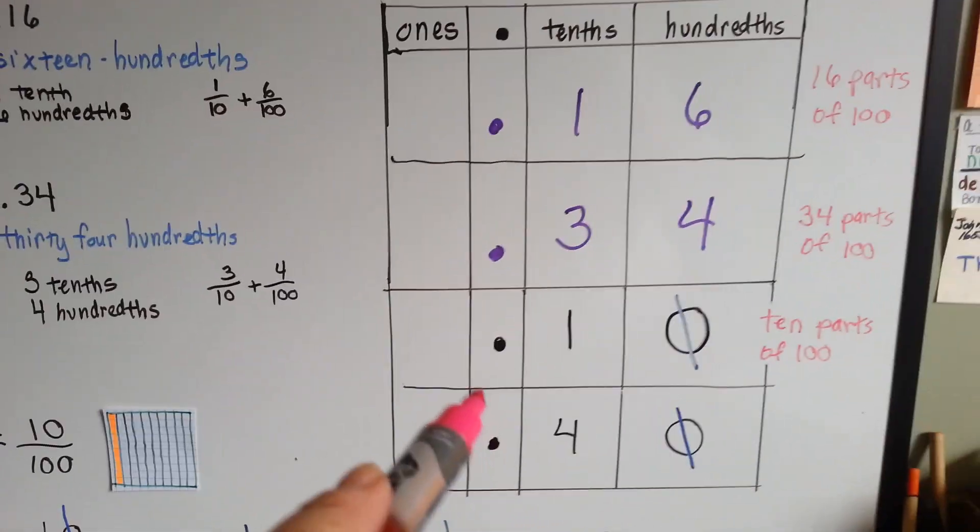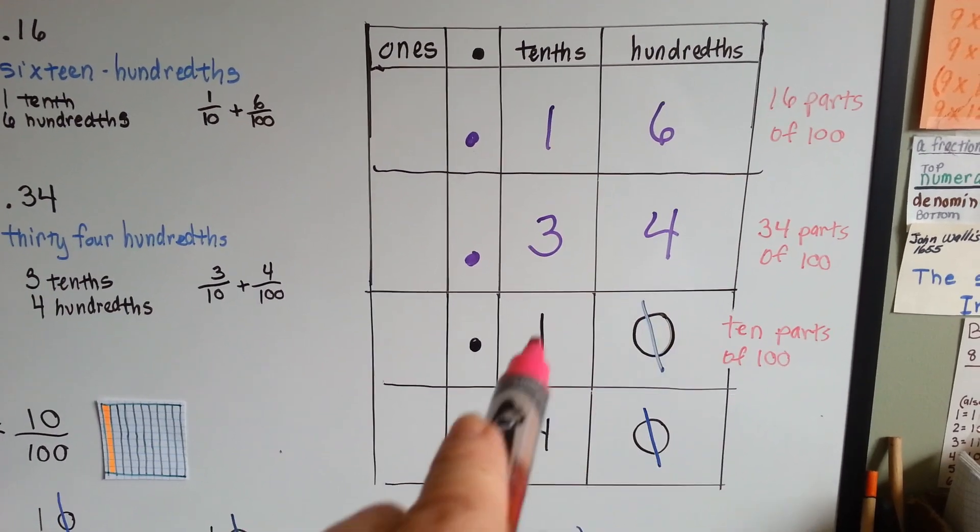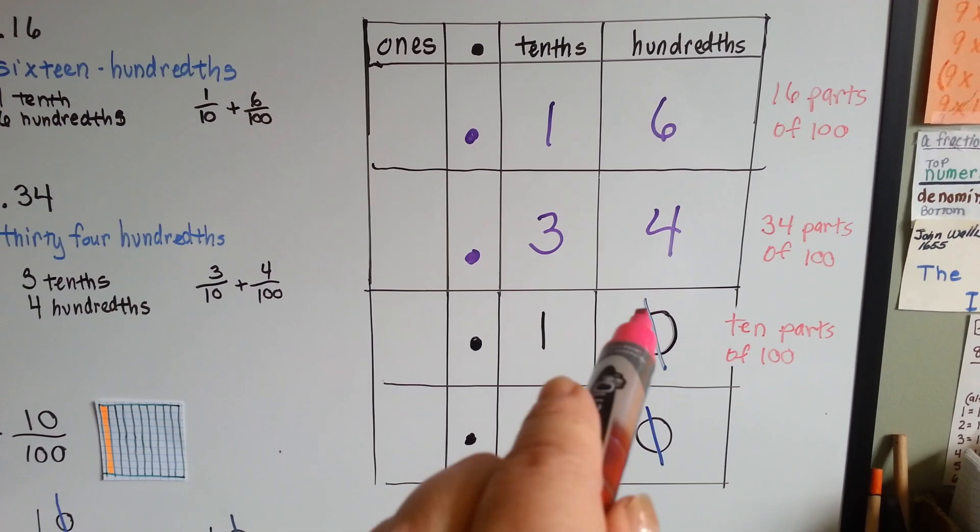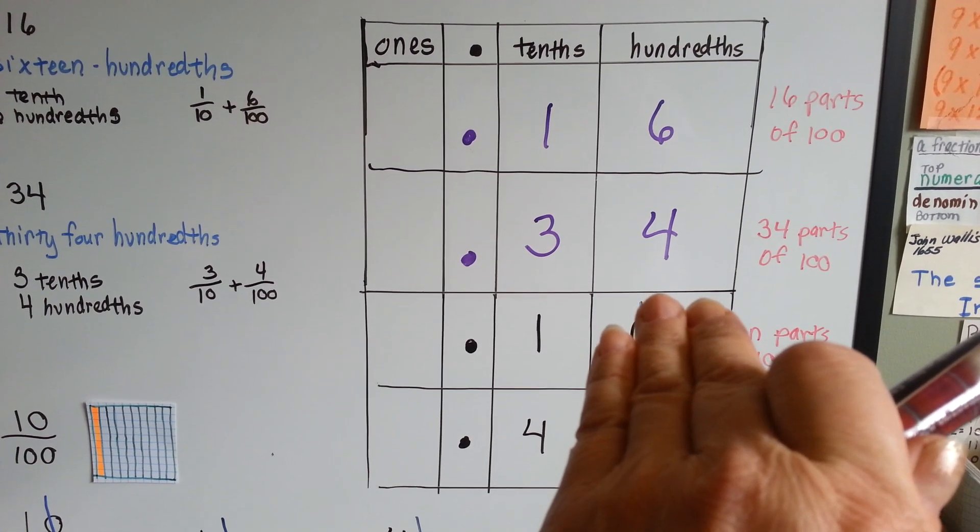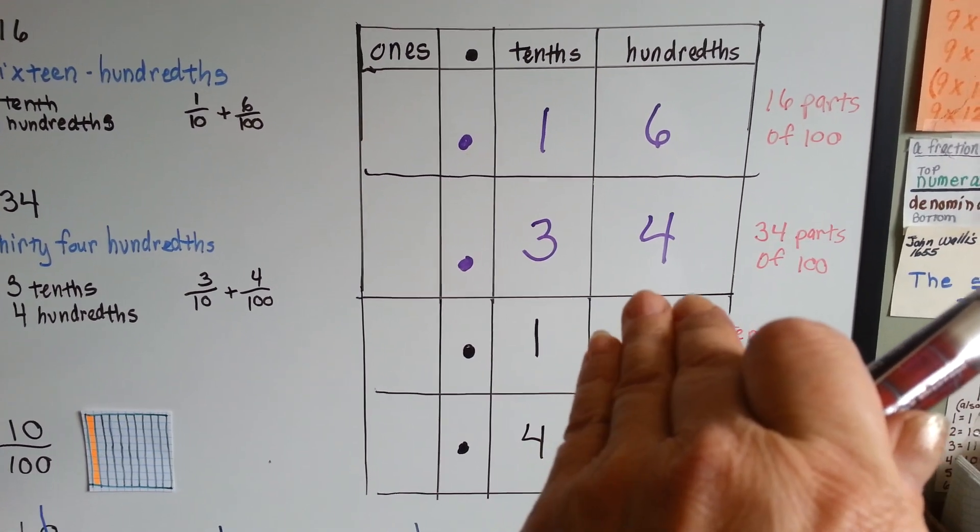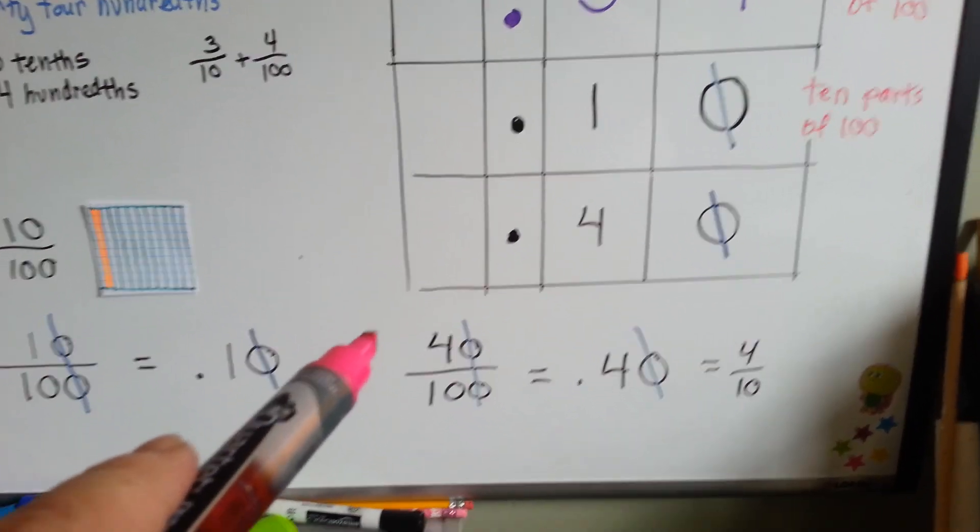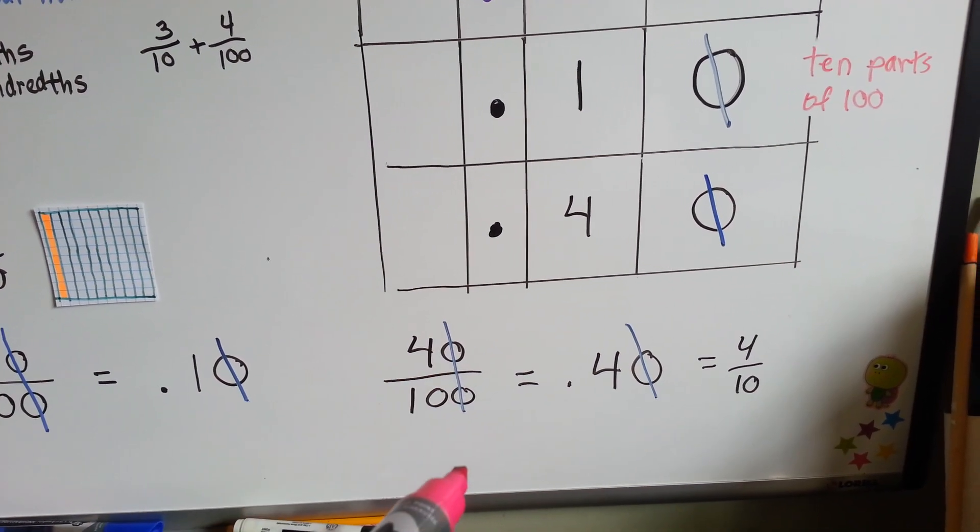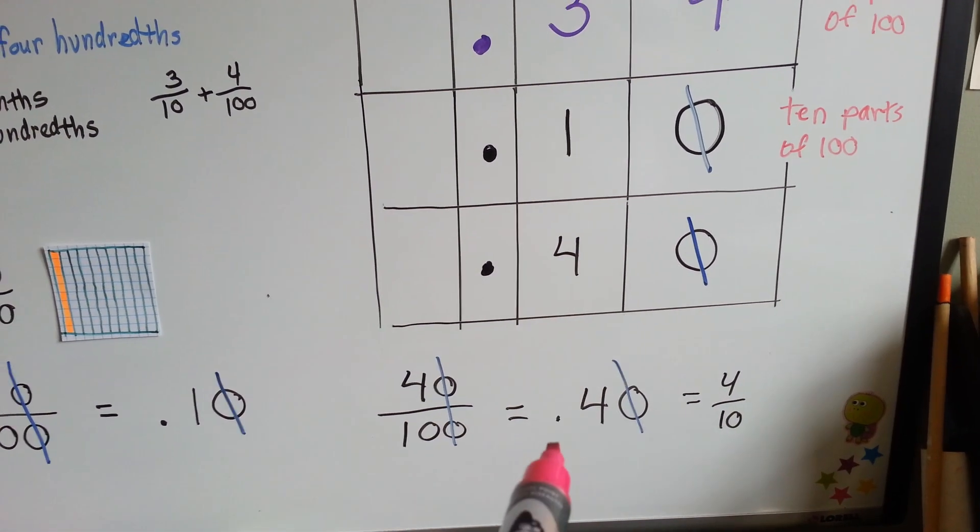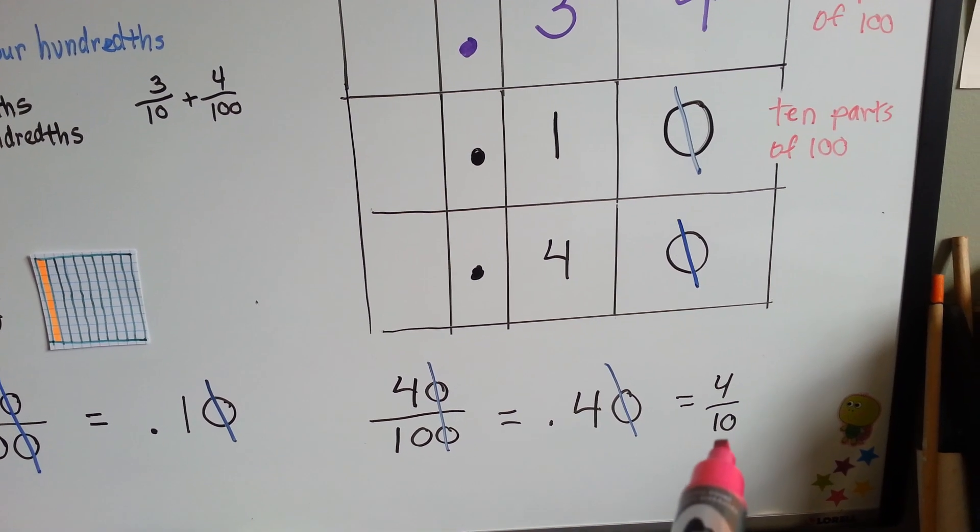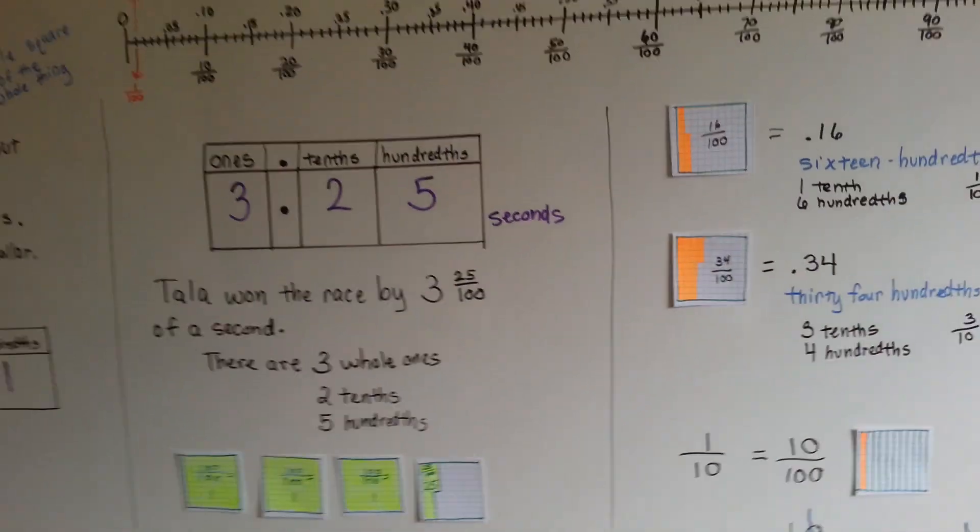If we did it with our place value chart, it would be the same thing as saying ten hundredths and just crossing off the zero and saying it's a tenth. Ten hundredths is the same thing as one tenth. Same thing for forty one hundredths. We could just take the zeros off the end and have four tenths. Forty one hundredths can be four tenths. We just take the zero off. It's equivalent fractions.